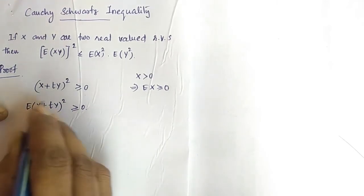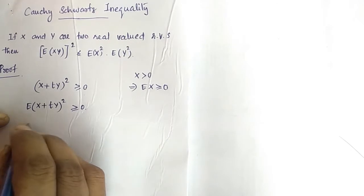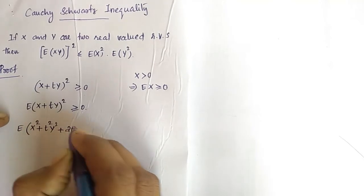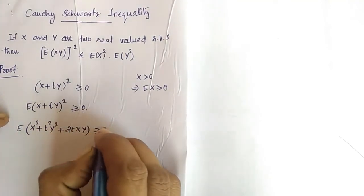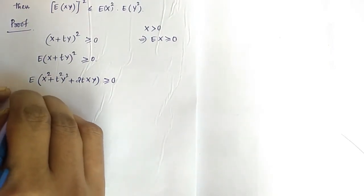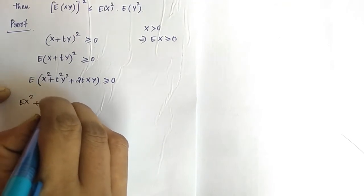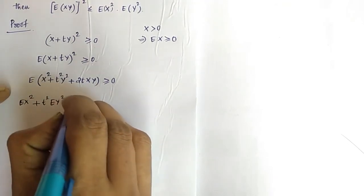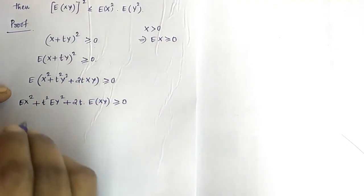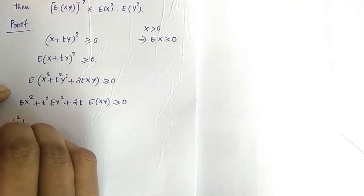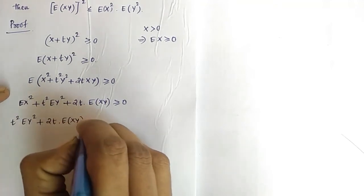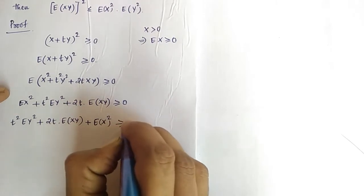Now we can expand this term using the a plus b whole square formula. So expectation of x square plus t square y square plus 2txy is greater than or equal to 0. Applying expectation to each term: expectation of x square plus t square expectation of y square plus 2t expectation of xy is greater than or equal to 0. We can rearrange these terms as t square expectation of y square plus 2t expectation of xy plus expectation of x square, greater than or equal to 0.